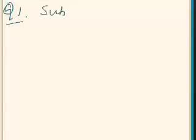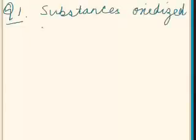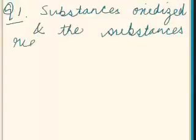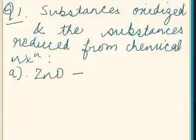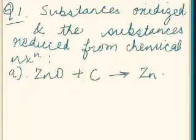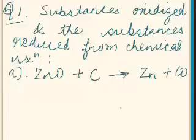Our first question is to identify the substances which are oxidized and the substances reduced from a chemical reaction. Our first example is zinc oxide plus carbon, which gives zinc plus carbon monoxide. We have to identify the substance which is oxidized and the substance which is reduced in this chemical reaction.